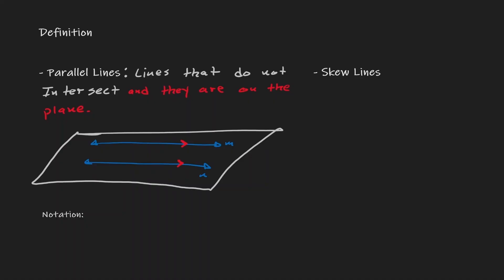The notation we can use is just two vertical lines to indicate that lines are parallel. So if we want to say that line M and line N are parallel to each other, we write M is parallel to line N. Now, what is the difference between parallel lines and skew lines? Skew lines are lines that do not intersect.